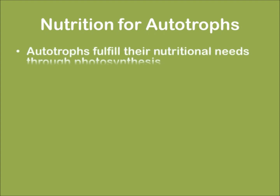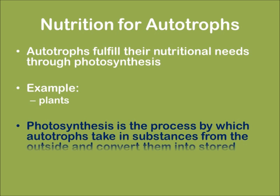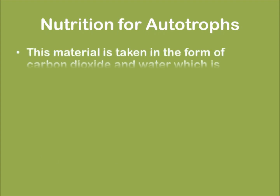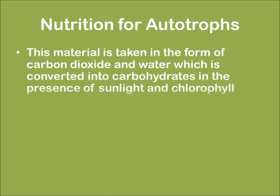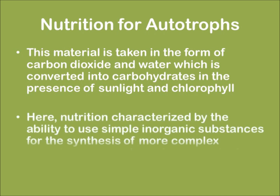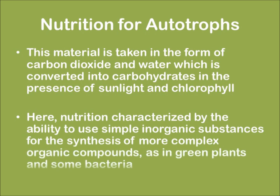Now let us learn about nutrition for autotrophs. Autotrophs fulfill their nutritional needs through a process known as photosynthesis, for example, plants. Defining photosynthesis: it is a process by which autotrophs take in substances from the atmosphere and convert them into stored forms of energy. The material taken from the atmosphere is carbon dioxide and water, which is converted into carbohydrates in the presence of sunlight and chlorophyll. The nutrition is characterized by the ability to use simple inorganic substances for the synthesis of more complex organic compounds, as in green plants and some bacteria.